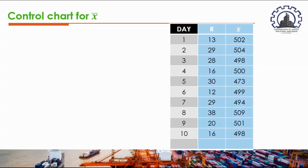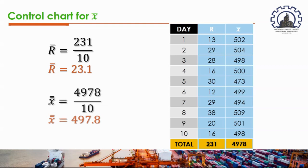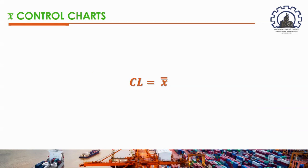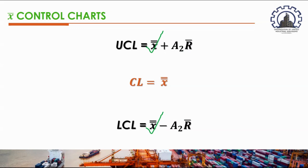Next, we calculate R-bar and X-double-bar. The sum of all the ranges is 231, so R-bar equals 231 divided by 10, which is 23.1. The sample means add up to 4,978, so X-double-bar equals 497.8. Looking at the control limit formula, we now have all values except A₂.